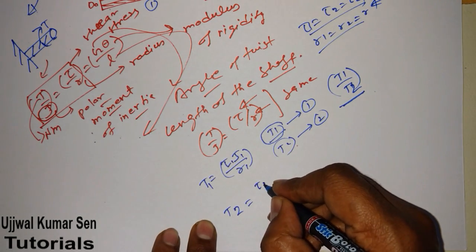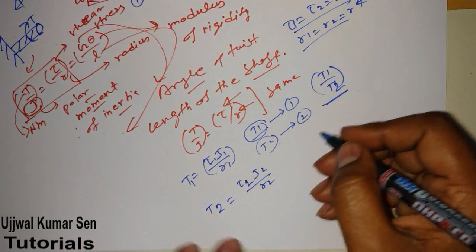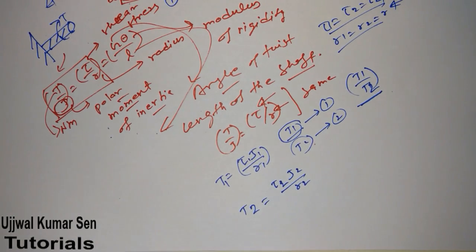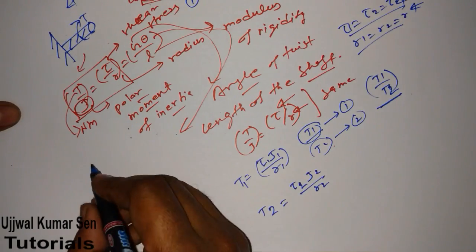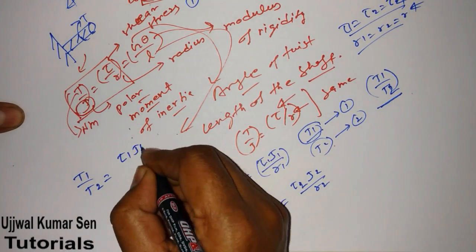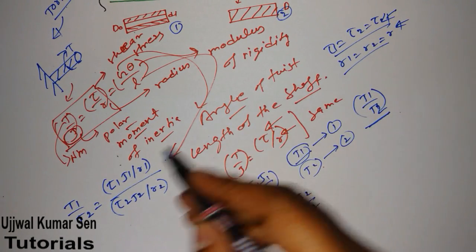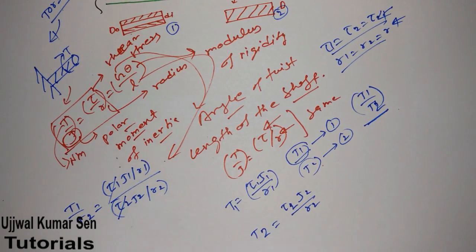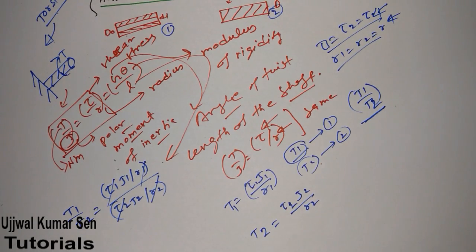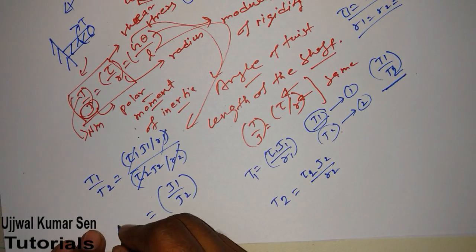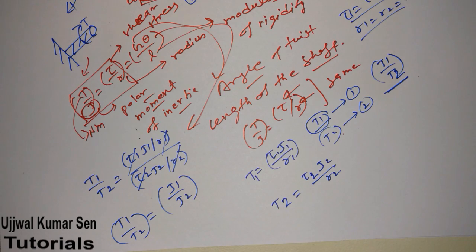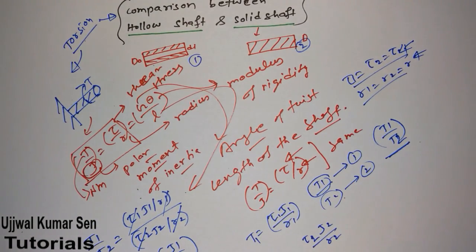So T1/T2 = (τ1 · J1 / r1) / (τ2 · J2 / r2). Since τ1 = τ2 and r1 = r2, they cancel out. What remains is: T1/T2 = J1/J2. Now we need to find the polar moment of inertia for both shafts.